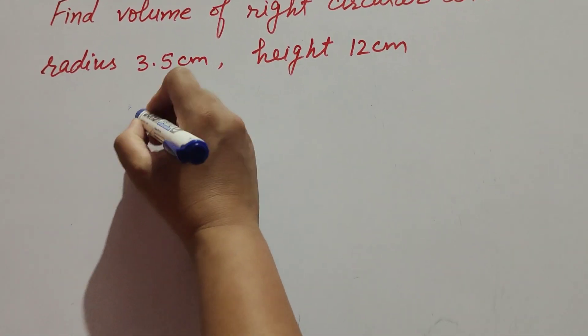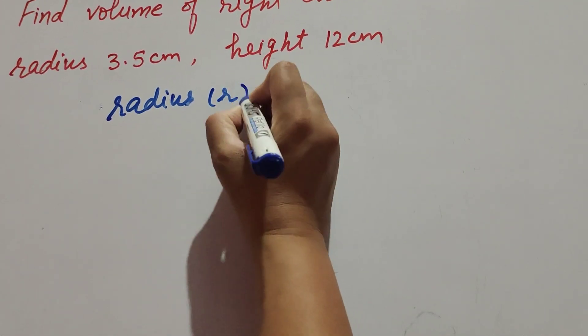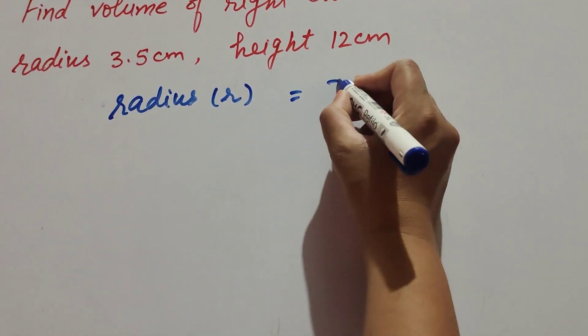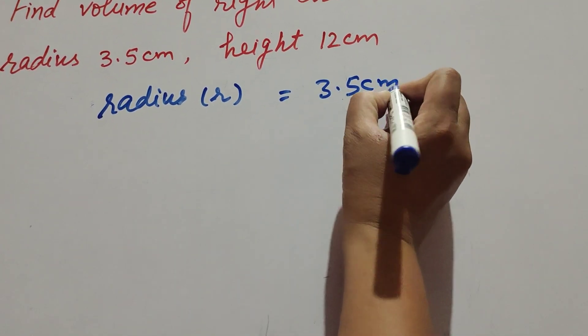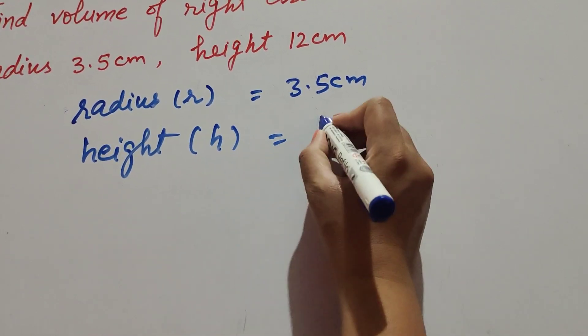Radius r equals 3.5 cm. Height h equals 12 cm.